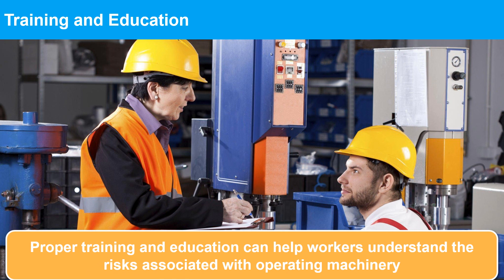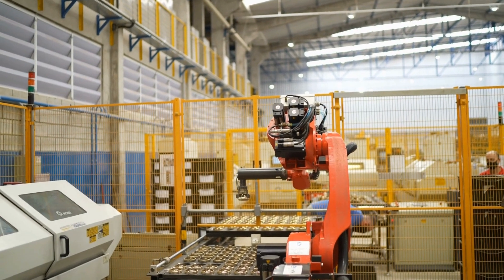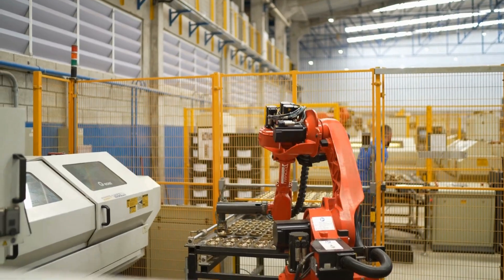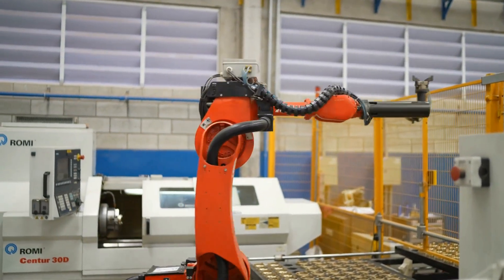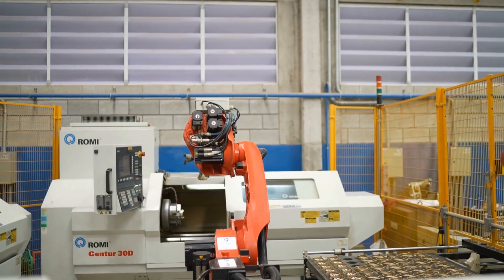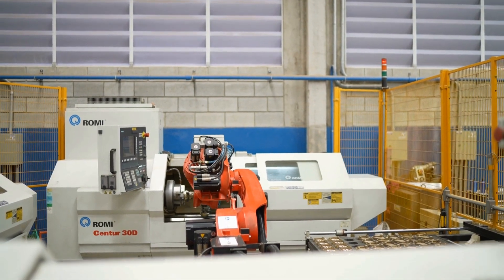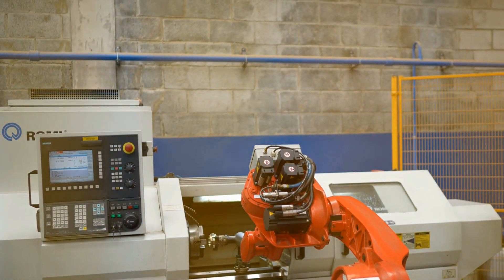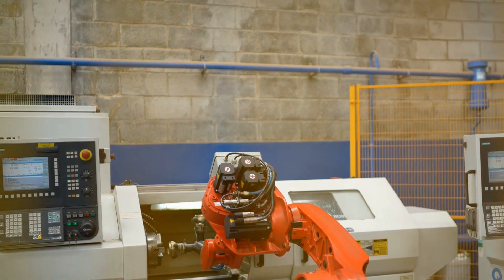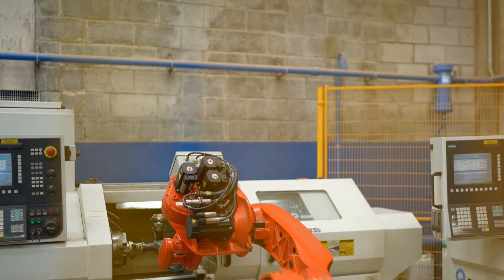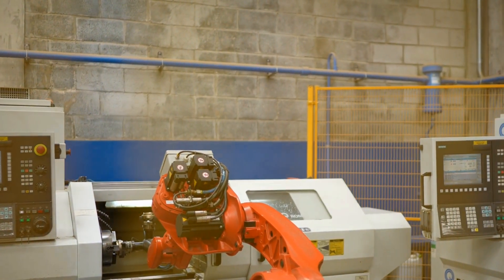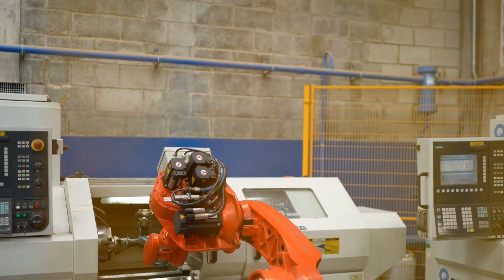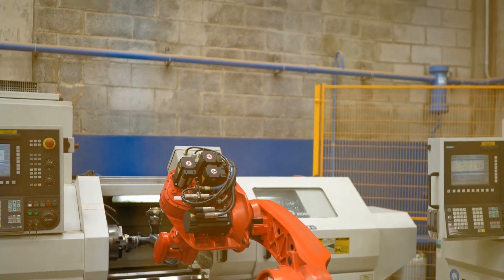Training and education: proper training and education can help workers understand the risks associated with operating machinery and how to operate machinery safely. In conclusion, implementing effective control measures for reducing risks from machinery hazards is critical to ensuring the safety and well-being of workers. By prioritizing safety and following proper protocols, we can prevent accidents and create a safer workplace for everyone. Thank you.